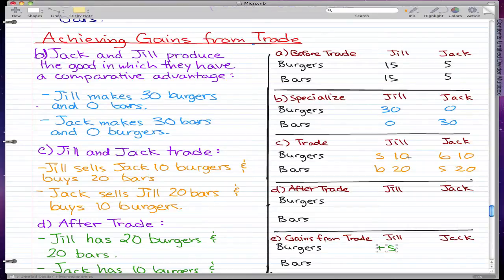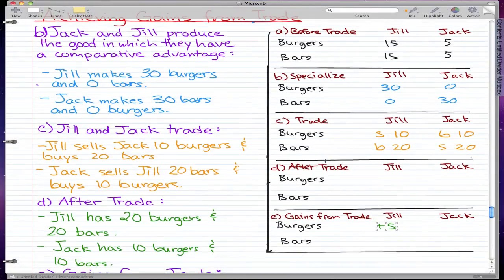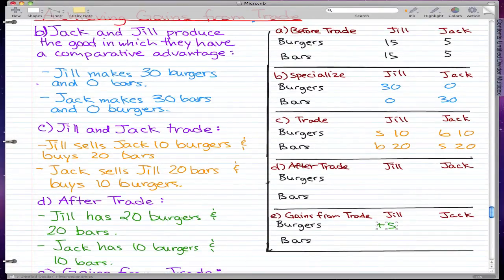So those are the quantities traded. Now after the trade, what will happen? What are the quantities they will have after the trade? After the trade, Jill will have 20 burgers and 20 bars, while Jack will have 10 burgers and 10 bars.